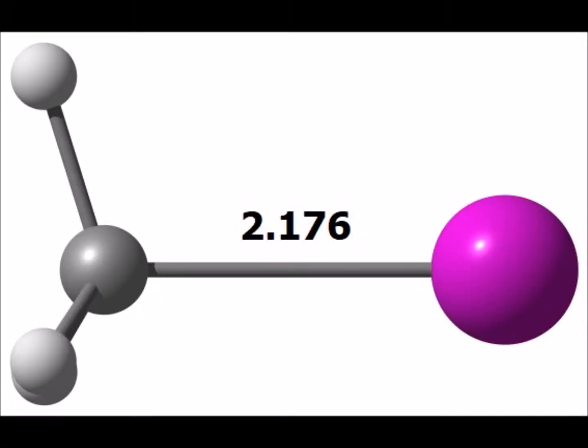Here is iodomethane, also known as methyl iodide. The iodine atom is shown in purple. The carbon-halogen bond length is 2.176 angstroms. And we see that as we go down the halogens from fluorine down to iodine, that the carbon-halogen bond length steadily increases.